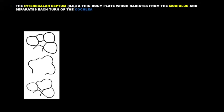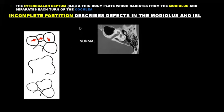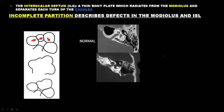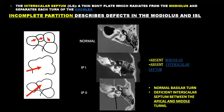Dr. Sonaraglou and others have emphasized the importance of the interscalar septum, which is a thin bony plate radiating from the modiolus, separating each turn of the cochlea. The incomplete partition describes defects in the modiolus and interscalar septum. Those with an absent modiolus and absent interscalar septum are referred to as incomplete partition type 1, which is associated with a cystic cochlea. Incomplete partition type 2 is associated with a normal basilar turn, a deficient interscalar septum between the apical and middle turns, and is consistently associated with a large vestibular aqueduct.